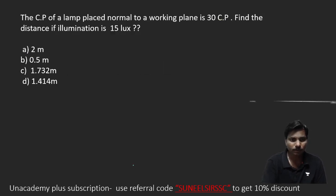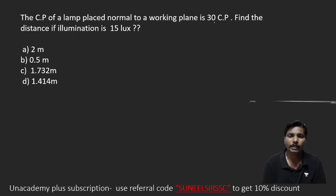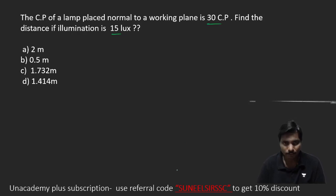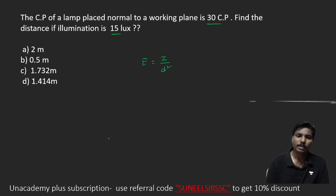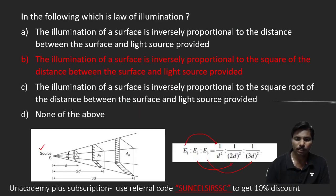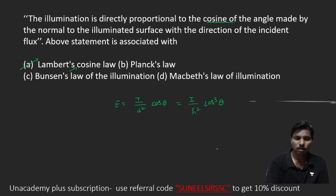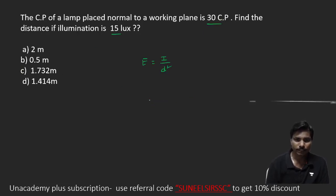Coming to the next problem: the candle power of a lamp placed normal to the working plane is 30 CP. Find the distance if illumination is 15 lux. Using the law of illumination: E = I/d², so d² = I/E, and distance d = √(I/E).